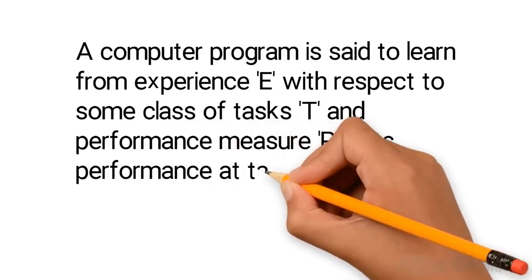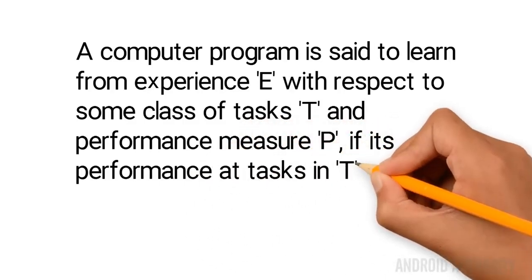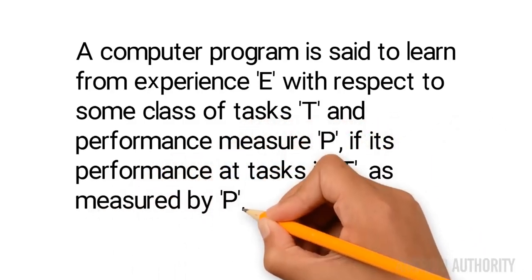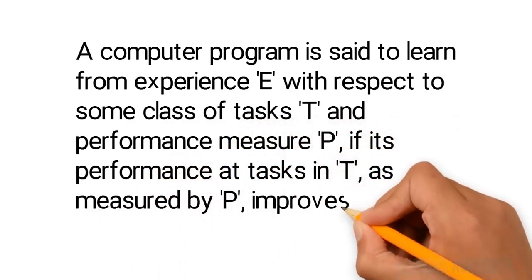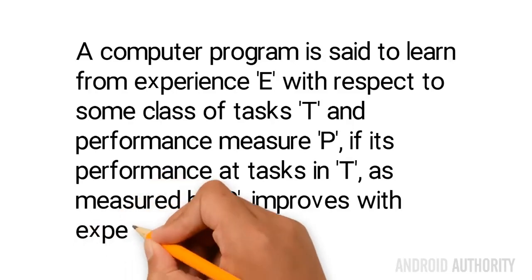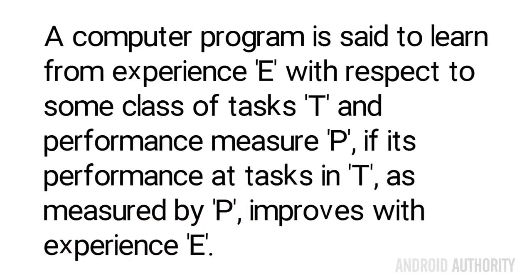if its performance at tasks in T, as measured by P, improves with experience E. Let me try to put that more simply: if a computer program can improve how it performs a certain task based on past experience, then you can say it has learned.